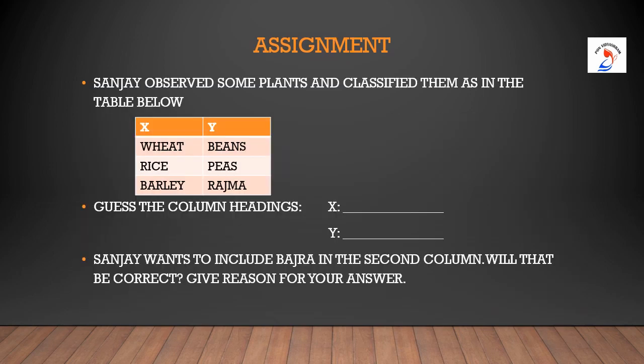So children, we learnt about how plants are the most important source of food for human beings. They provide us various food materials such as cereals, pulses, fruits, vegetables, spices, oil and beverages. Here is a simple assignment for you to check whether you have understood the concepts.